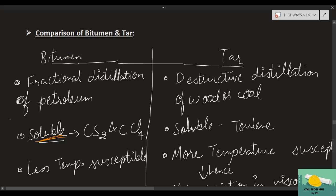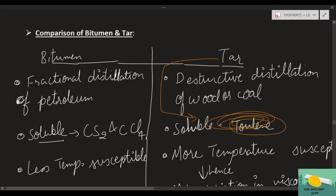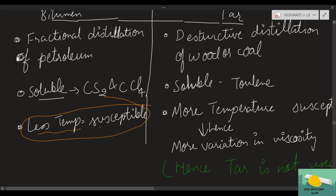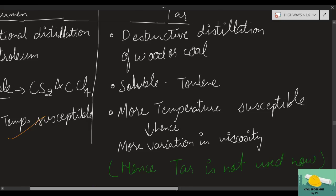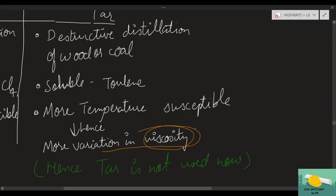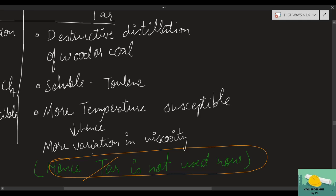Regarding solubility: bitumen is soluble in carbon disulfide (CS₂) and carbon tetrachloride (CCl₄), while tar is soluble in toluene. The important reason tar was replaced by bitumen is that tar is more temperature susceptible, meaning its viscosity varies greatly with temperature changes. This makes tar problematic in terms of workability and use, which is why tar is not used today.